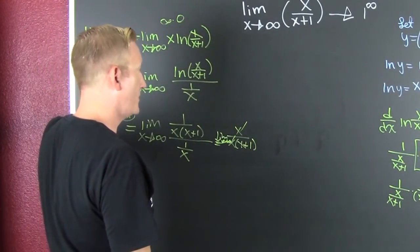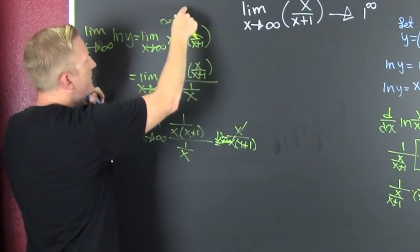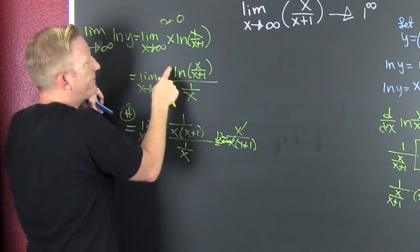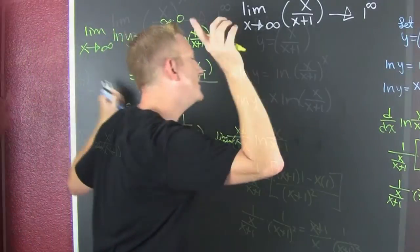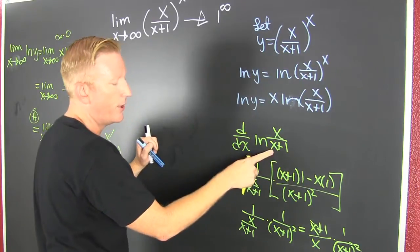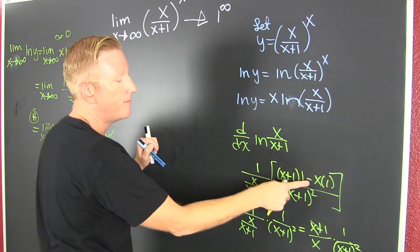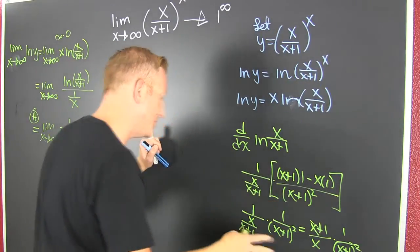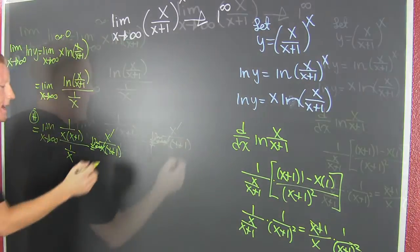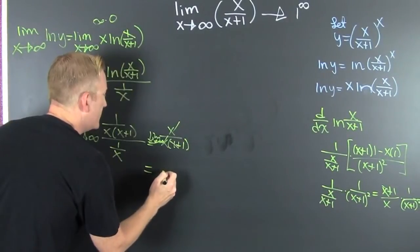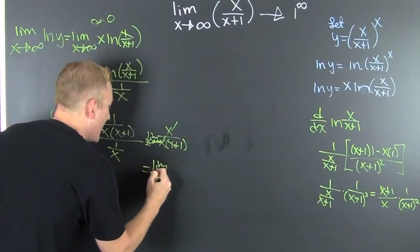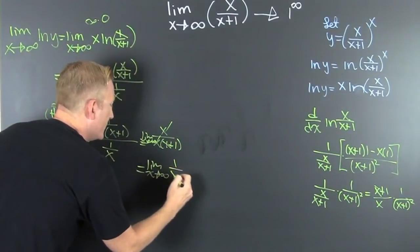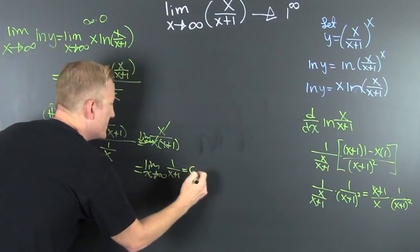Then you take the limit. That's zero times this, so you rewrite like this. You take the derivative — that's one over, times the derivative of that guy. This is low d-high minus high d-low, all over low-low. And that's the limit as X approaches infinity of one over X plus one, which is zero.